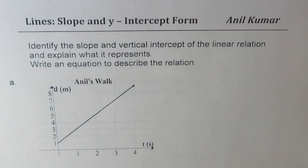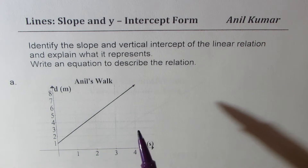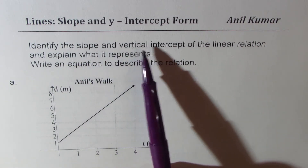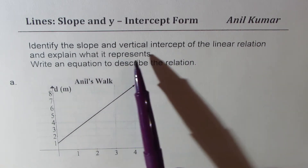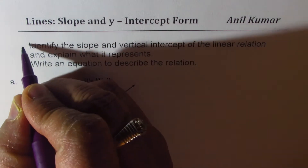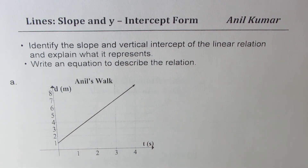I'm Anil Kumar. Welcome to my series on lines. We'll discuss slope and y-intercept form of linear equations in this particular video with the help of four examples. The type of example we have is to identify the slope and vertical intercept of the linear relation and explain what it represents, and then we need to write an equation to describe the relation. These are the two parts we are going to do for four different cases.